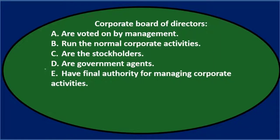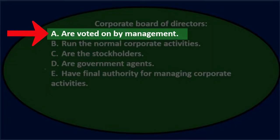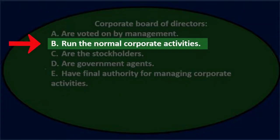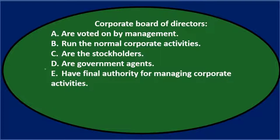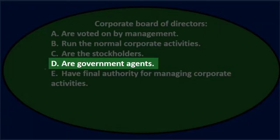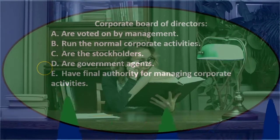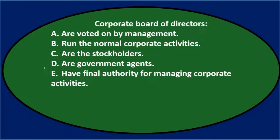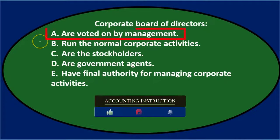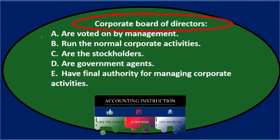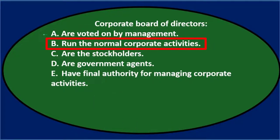Next question: corporate board of directors. Options: A) are voted on by management, B) run the normal corporate activities, C) are the stockholders, D) are government agents, and E) have final authority for managing corporate activities. We'll go through this with the process of elimination. Option A — are voted on by management: we might think management votes for the board of directors, so we'll keep that for now.